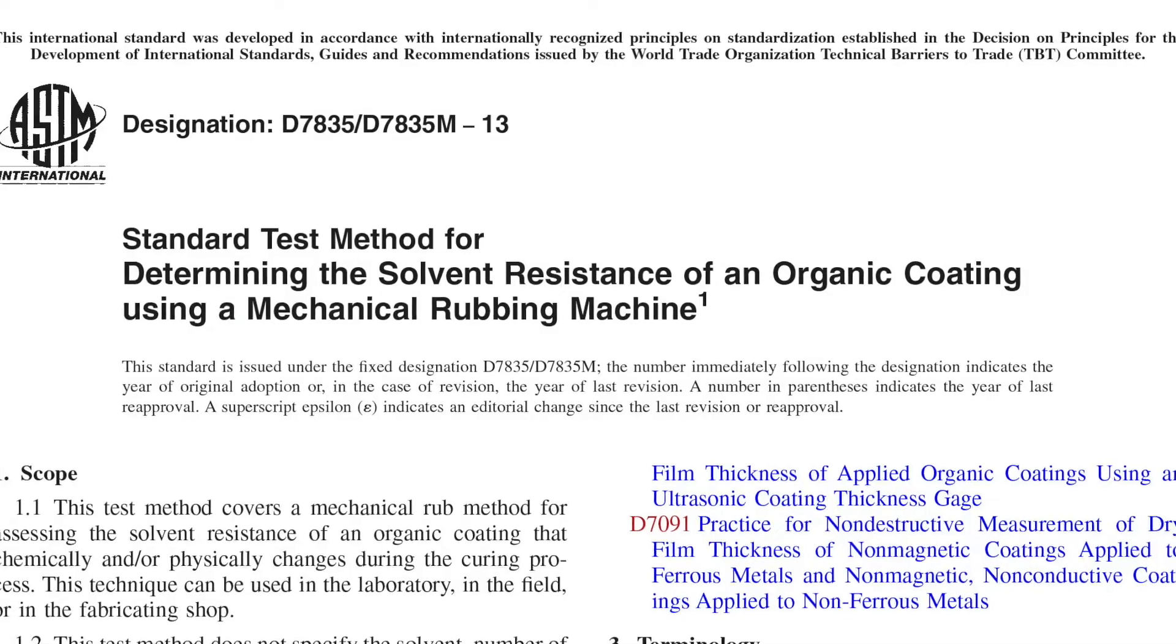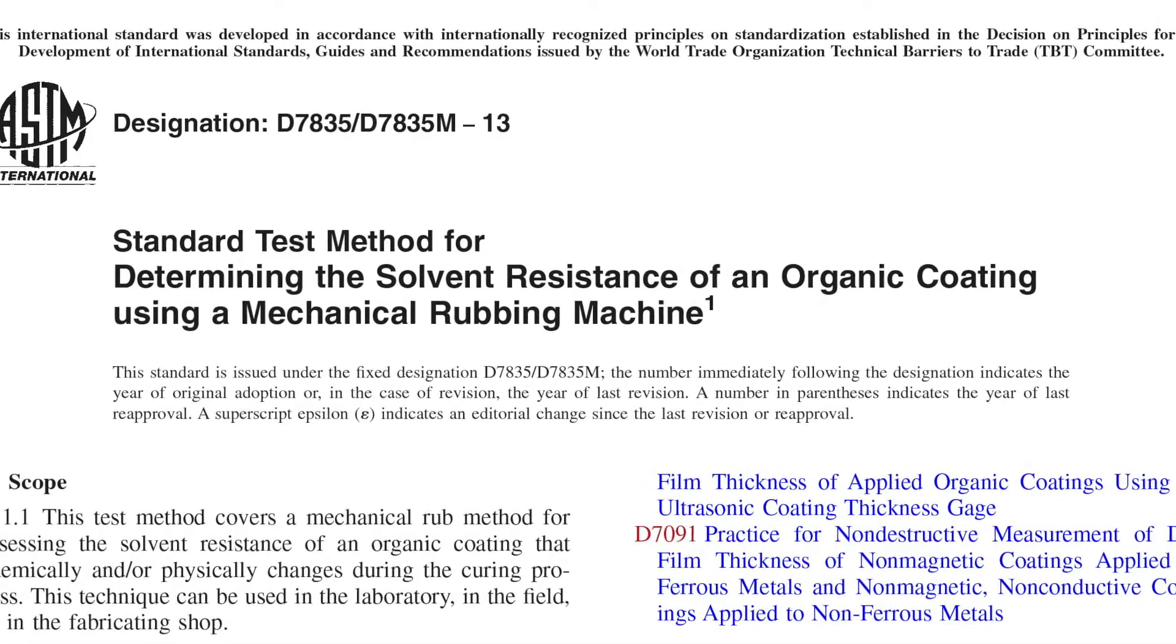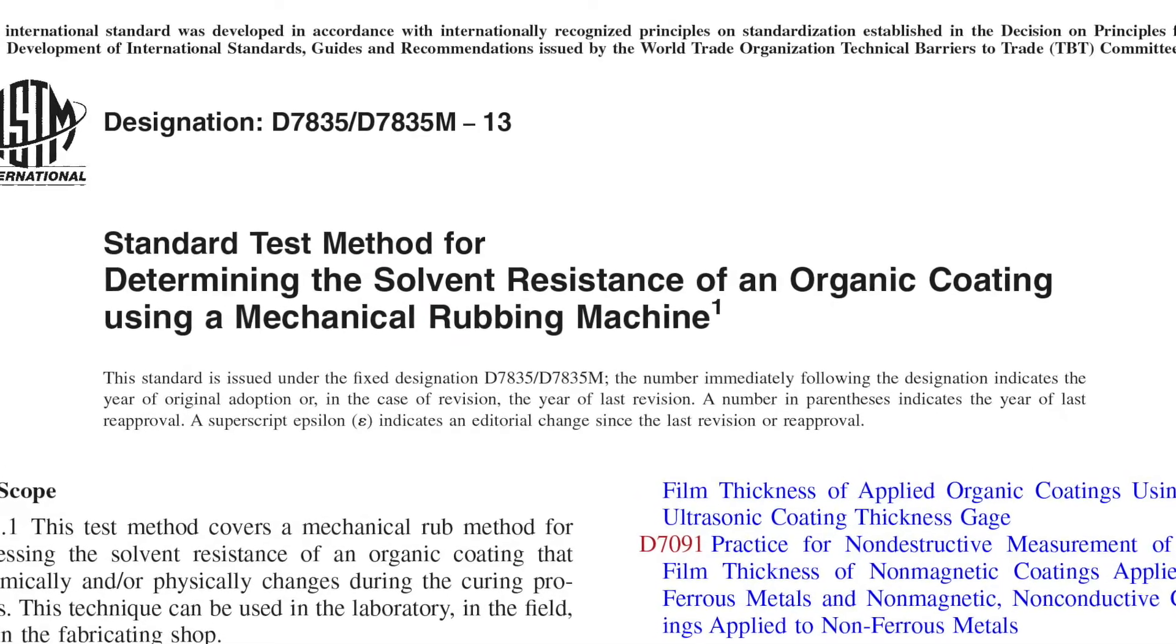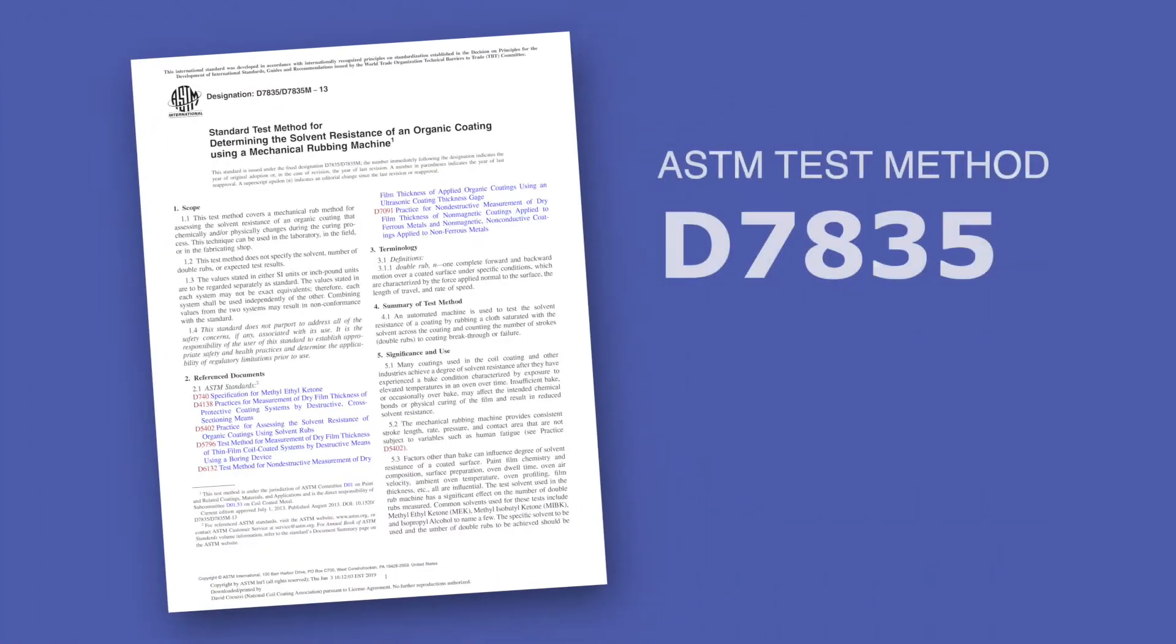This video demonstrates how to determine the solvent resistance of an organic coating using a mechanical rubbing machine in accordance with ASTM test method D7835.